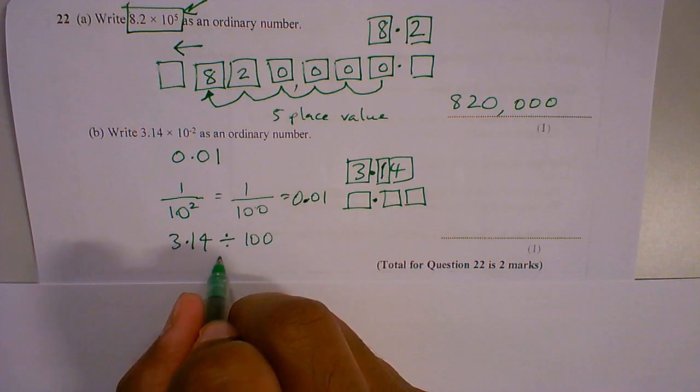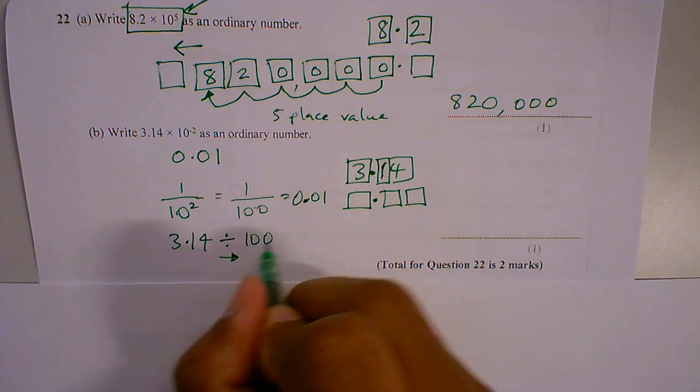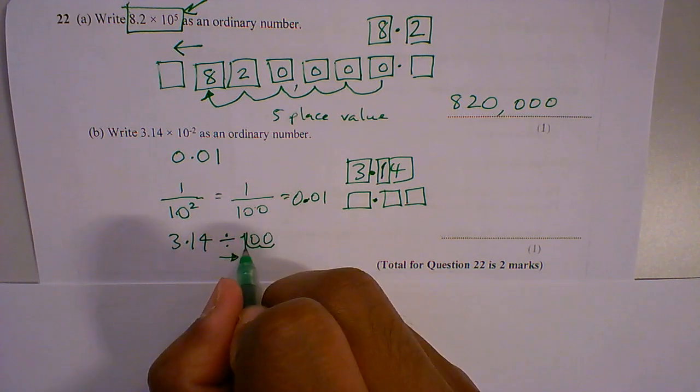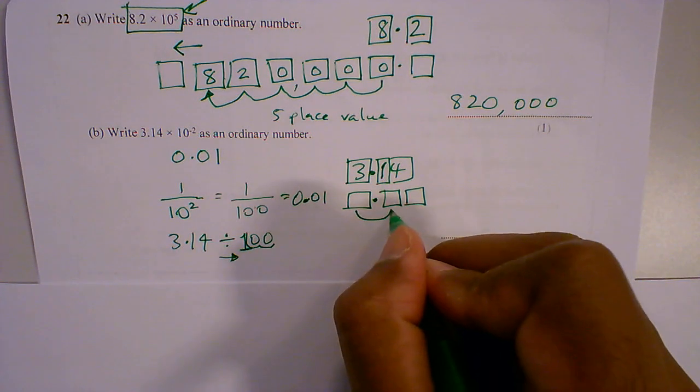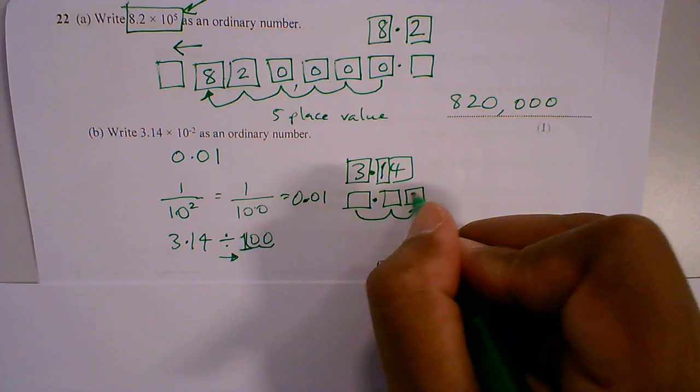And my numbers are going to be jumping to the right 2 place values. So I've got 1, 2 place values. So this is where the 3 jumps to.